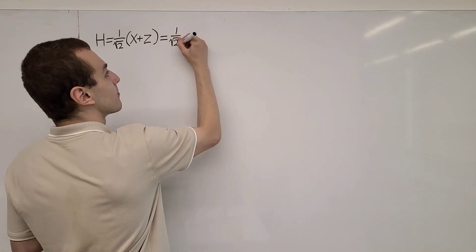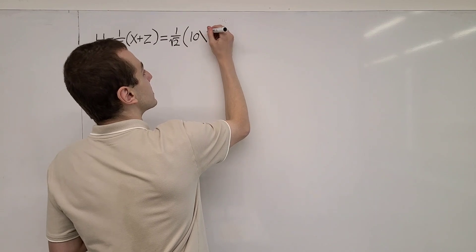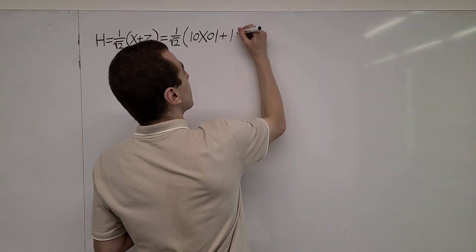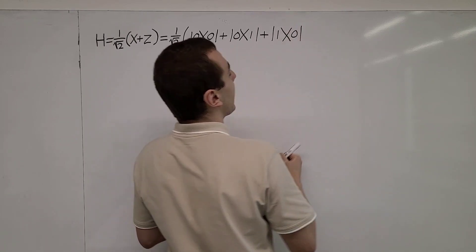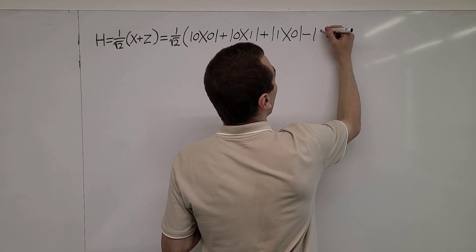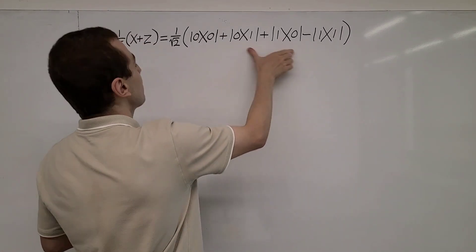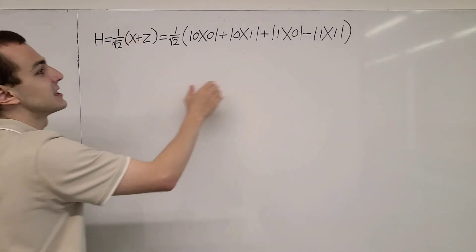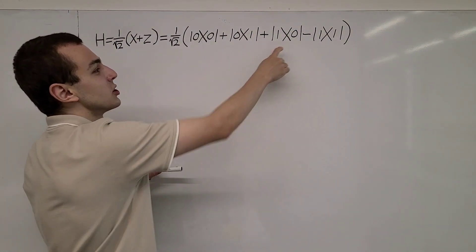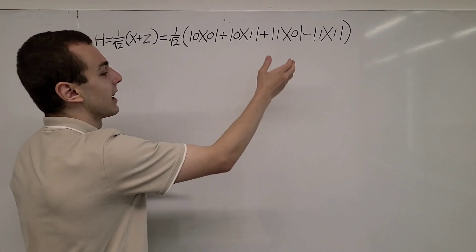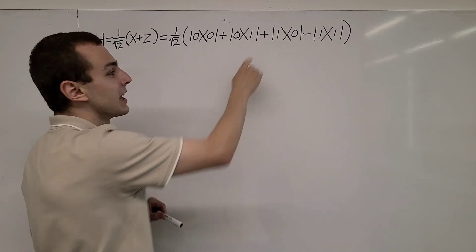In Dirac notation, this is equal to the same normalization coefficient times a bunch of ket-bra combinations: the |0⟩⟨0| ket-bra, the |0⟩⟨1| ket-bra, the |1⟩⟨0| ket-bra, and minus the |1⟩⟨1| ket-bra. These middle two came from the Pauli X operator — the Pauli X operator is defined as the sum of these two. In a matrix representation, these correspond to the off-diagonal entries, and a ket-bra combination gives us an operator.